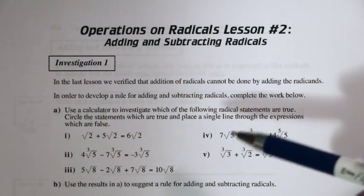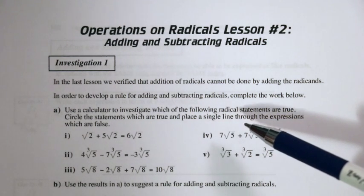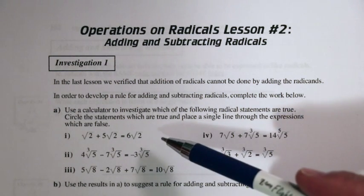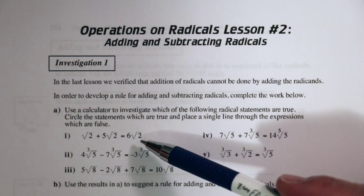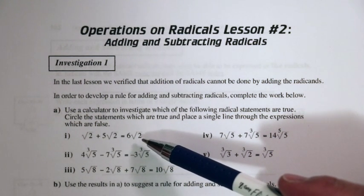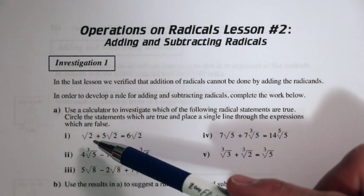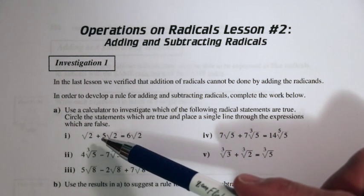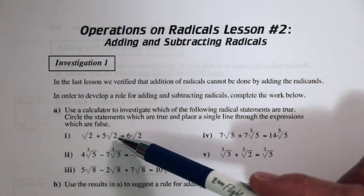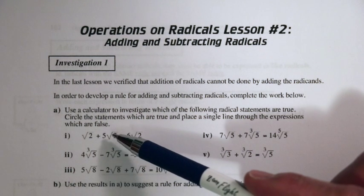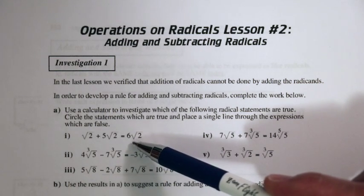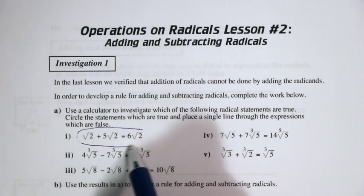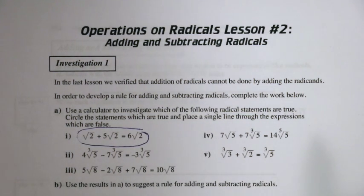We'll circle the statements which are true, and place a single line through the expressions which are false. Let's take a look at number one: we have root two plus five root two, and it says that it equals six root two. We can think of these root twos as like an x — five x plus one other x. So this is actually true. We can circle that: five root two plus one root two is six root two.